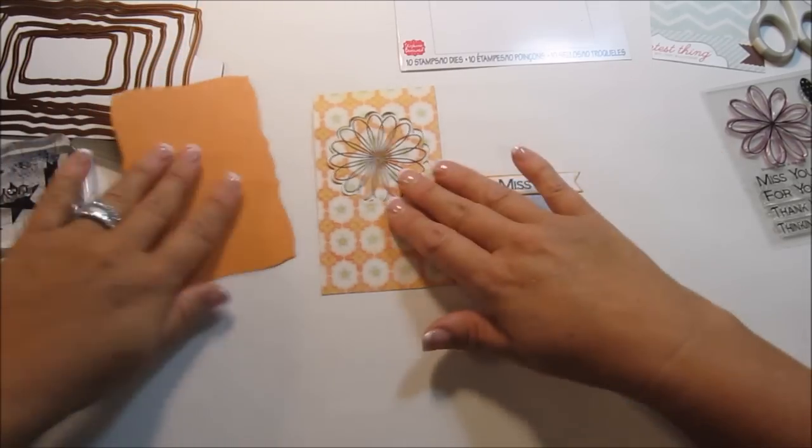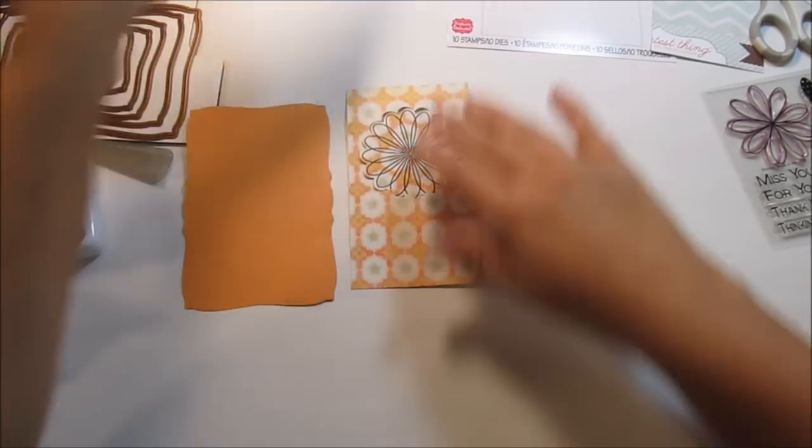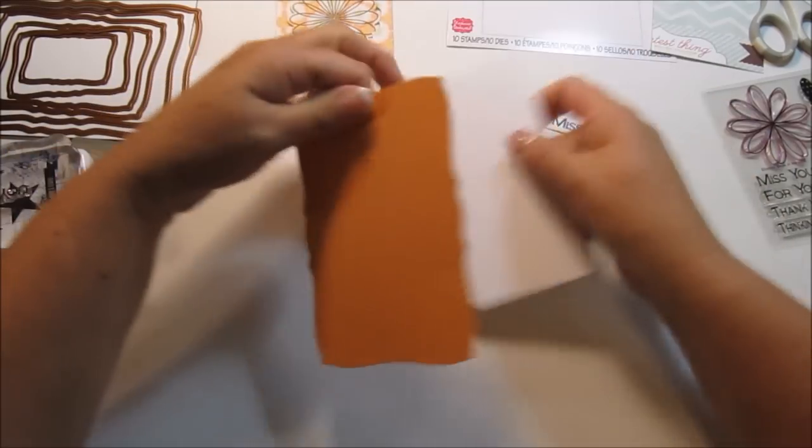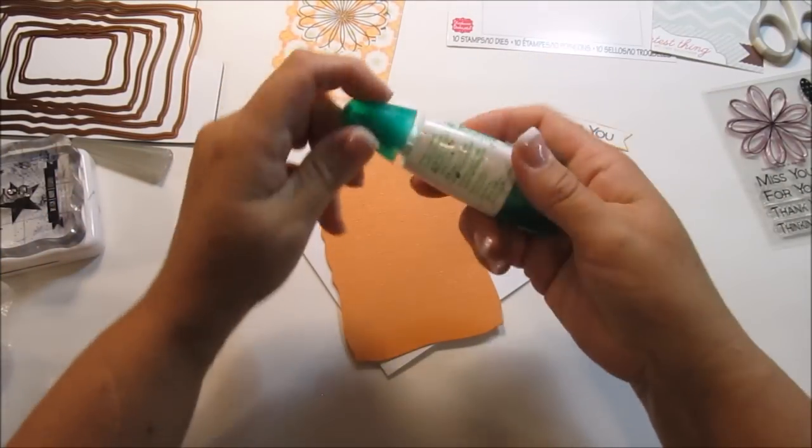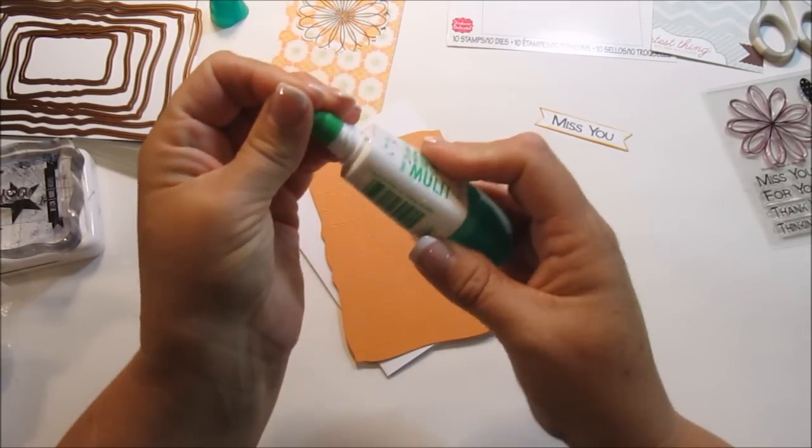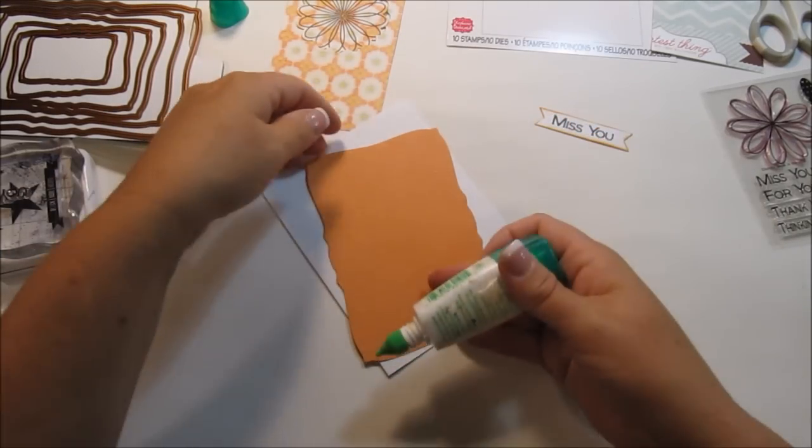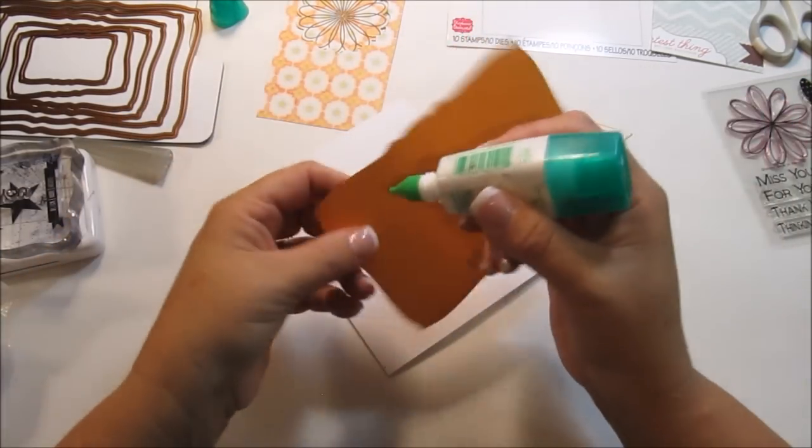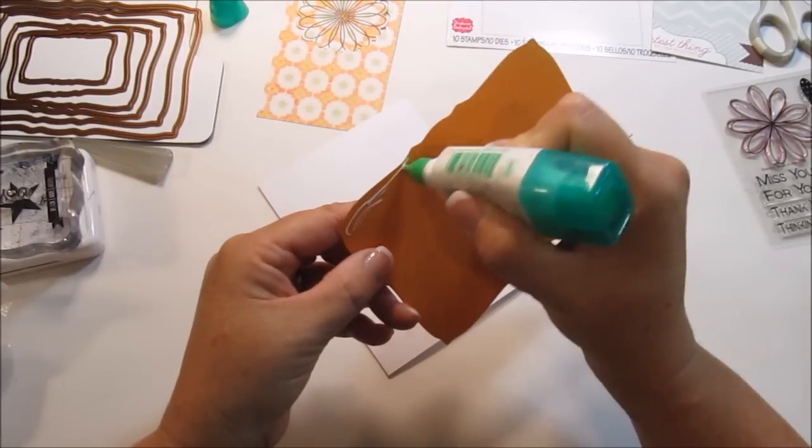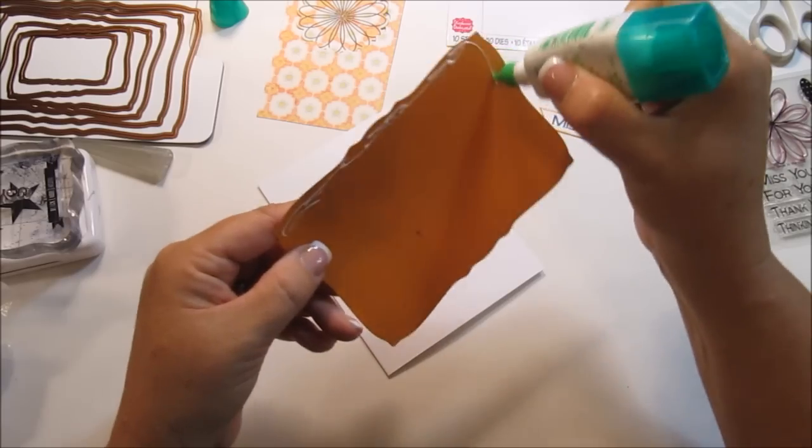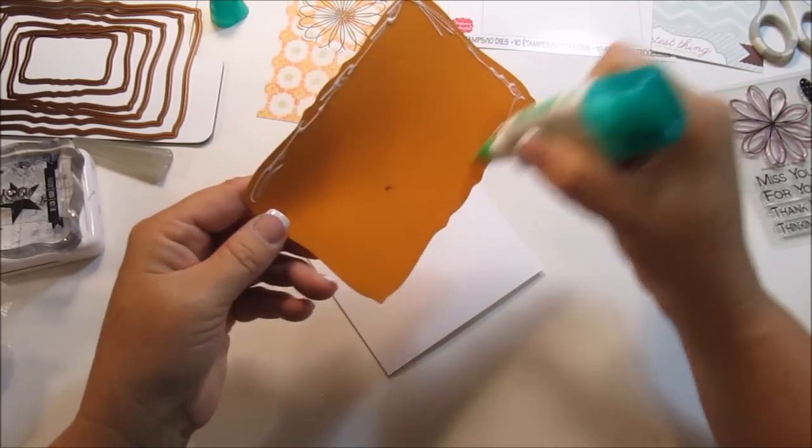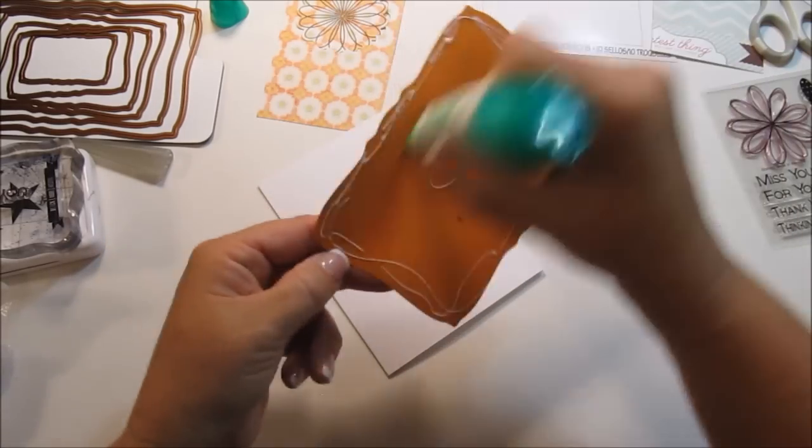Great. All right, so let's go ahead and put our card together for what we have so far. I'm just going to use my Tombow, and this is pretty because it's got a little bit of a shimmer to it, and it's Bazzill cardstock. It's not die cuts with a view, I think I said die cuts with a view, it's Bazzill.